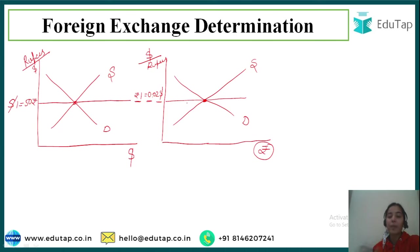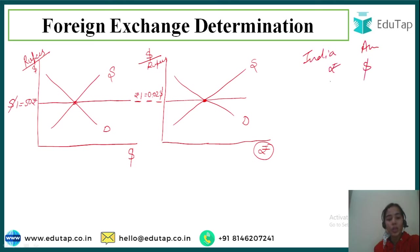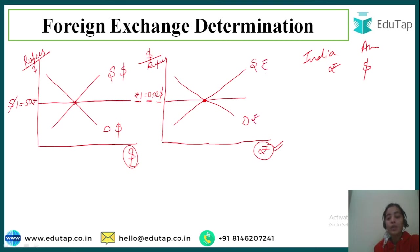Starting with foreign exchange determination — we will understand how exchange rate is determined between two countries. Let's talk about India and America, so we are talking about rupees and dollars. When we take the dollar on the x-axis, we are talking about the demand and supply of dollars. Indians will be demanding the dollars.